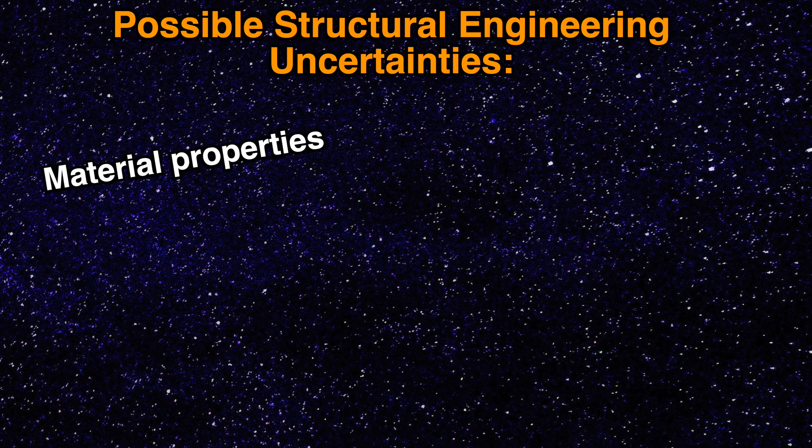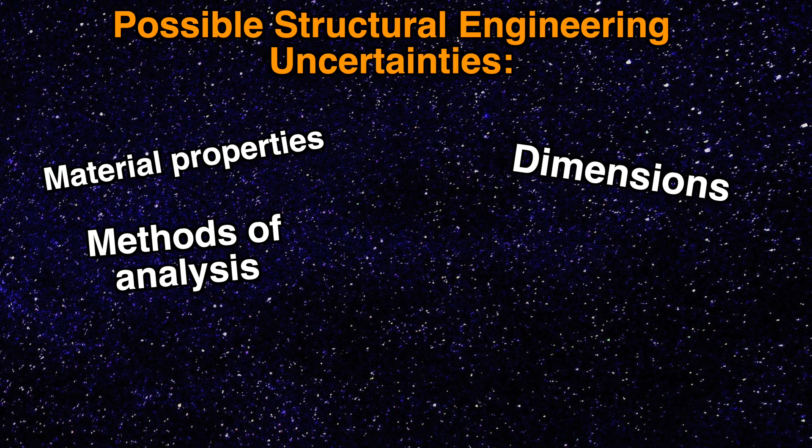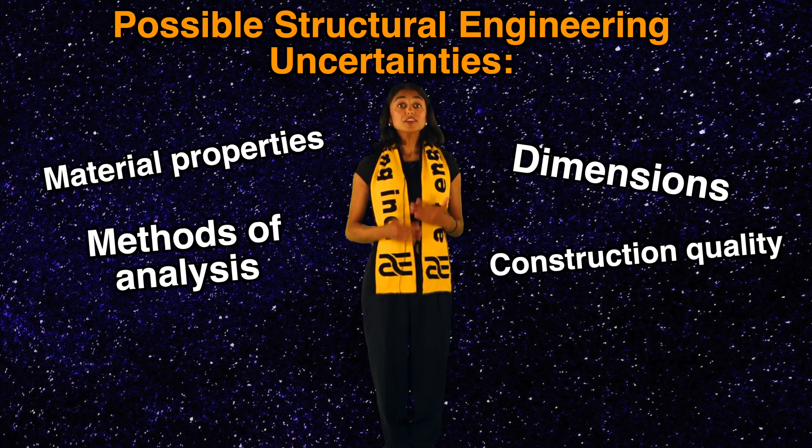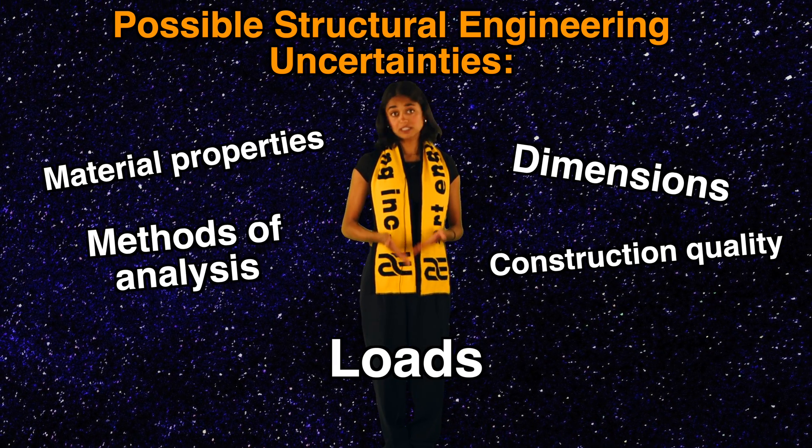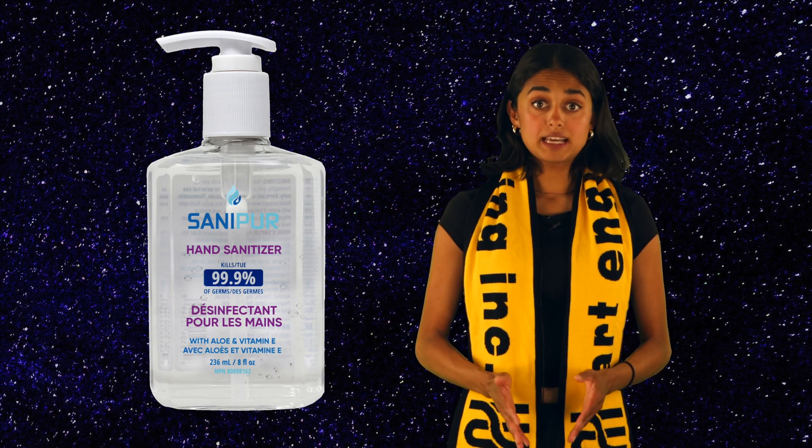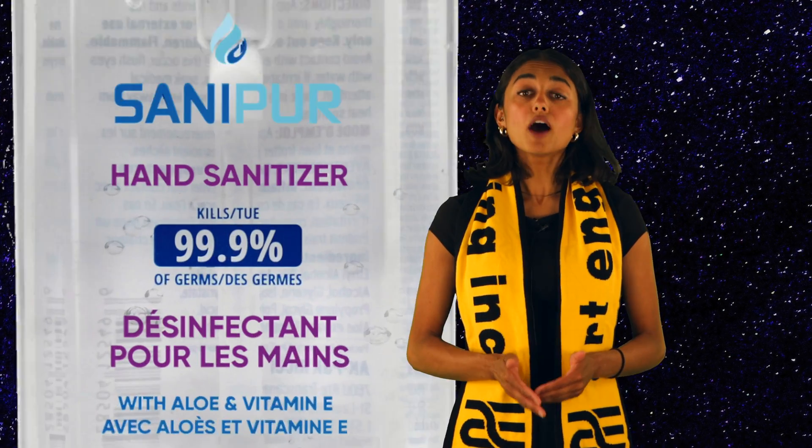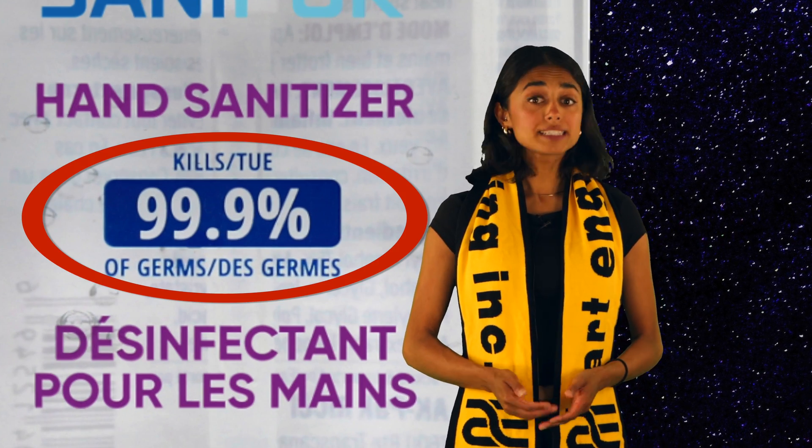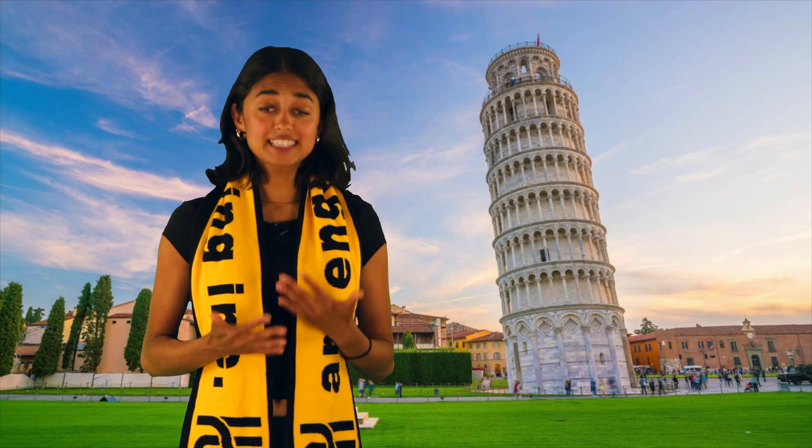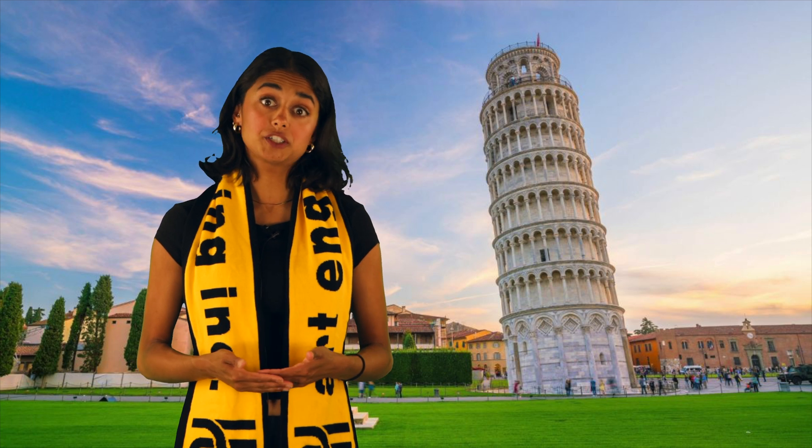Contrary to popular belief, structural engineers don't always deal with quantities that are perfectly known. There are loads of uncertainties in material properties, dimensions, methods of analysis, construction quality, and even loads that make them not so easily quantifiable. Absolute safety, for example, zero probability of failure, cannot be practically achieved. But how safe is safe enough? We cannot say with absolute certainty whether some structure is stable. We can only calculate certain probabilities.